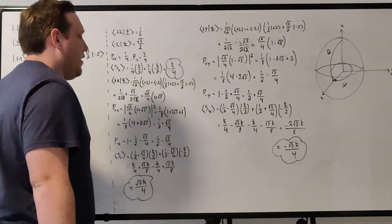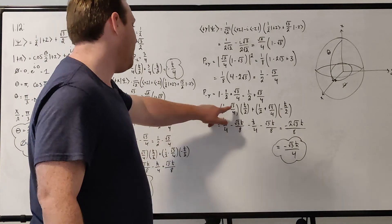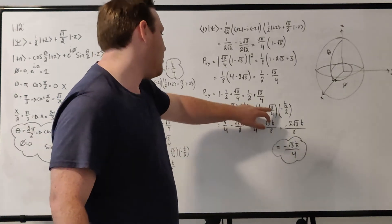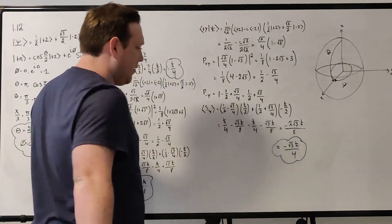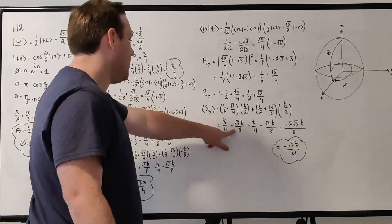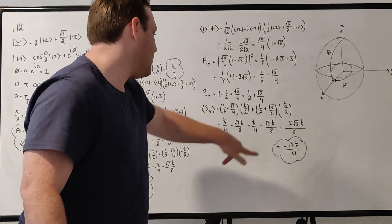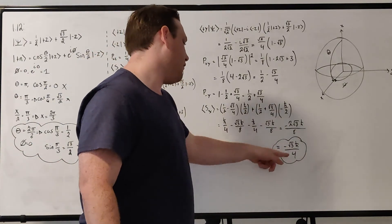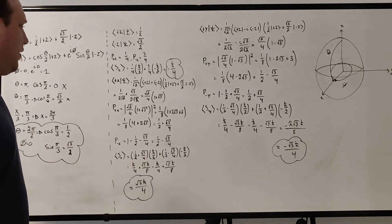Plug it all into the expectation value equation. You get the expectation value for plus y. Sorry, the probability for plus y is 1 half minus root 3 over 4 times h bar over 2, plus the probability for minus y, which is 1 half plus root 3 over 4 times minus h bar over 2. And you basically get the same answer here, for the most part. You get h bar over 4 minus root 3 h bar over 8, minus h bar over 4, and then another minus root 3 h bar over 8. So the h bar over 4s cancel. You get a minus 2 root 3 h bar over 8, which simplifies down to minus root 3 h bar over 4, which is the same value with a minus sign as we got for the x component of spin.